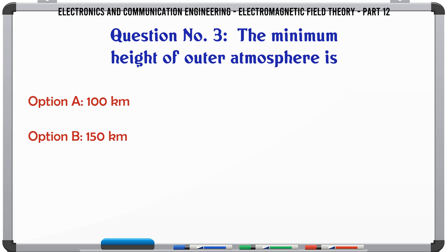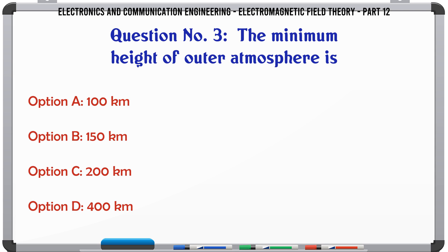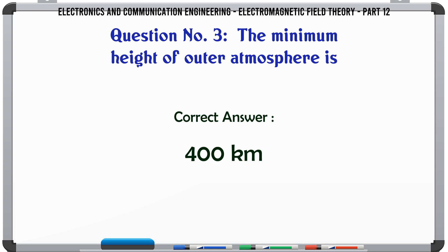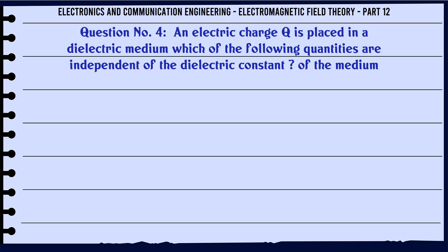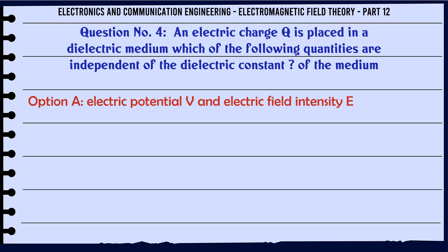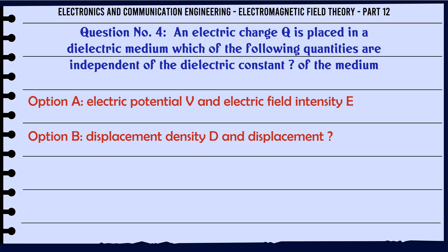The correct answer is D: With a reflector and one or more directors. The minimum height of the outer atmosphere is: A. 100 km, B. 150 km, C. 200 km, D. 400 km.